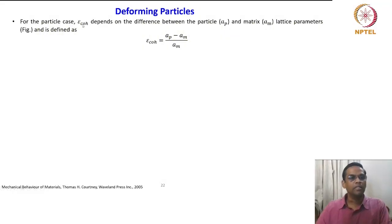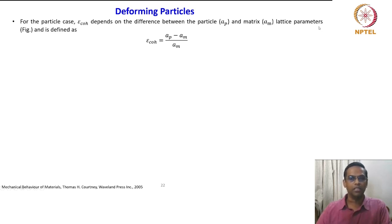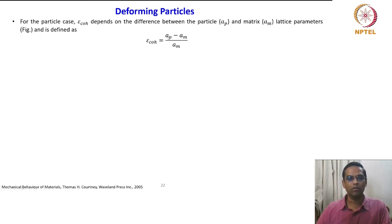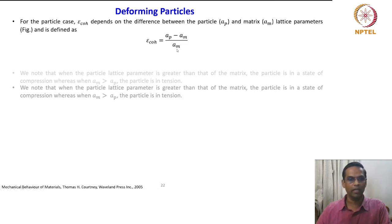For the particle case, epsilon coherent depends on the difference between the particle lattice parameter A_p and the matrix lattice parameter A_m. A_p is the lattice parameter of the particle, A_m is the lattice parameter of the matrix. As shown in the figure, epsilon coherence is equal to (A_p minus A_m) divided by A_m.